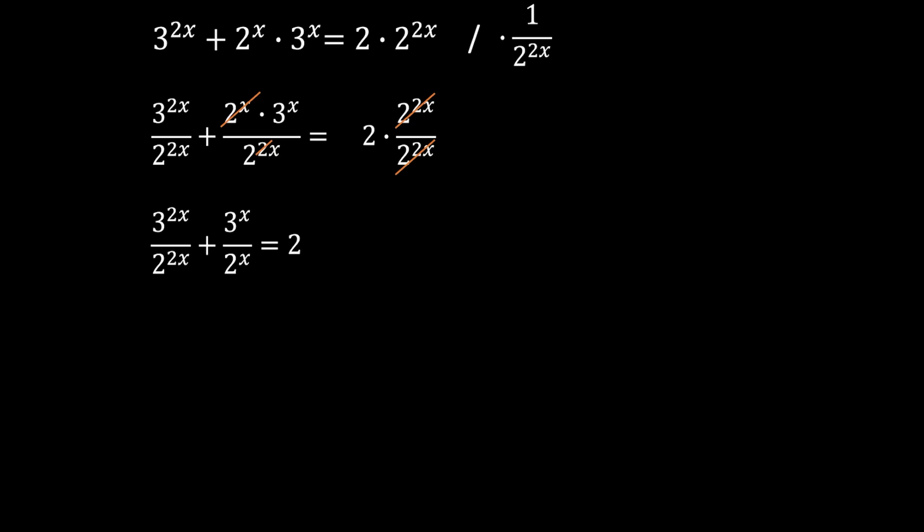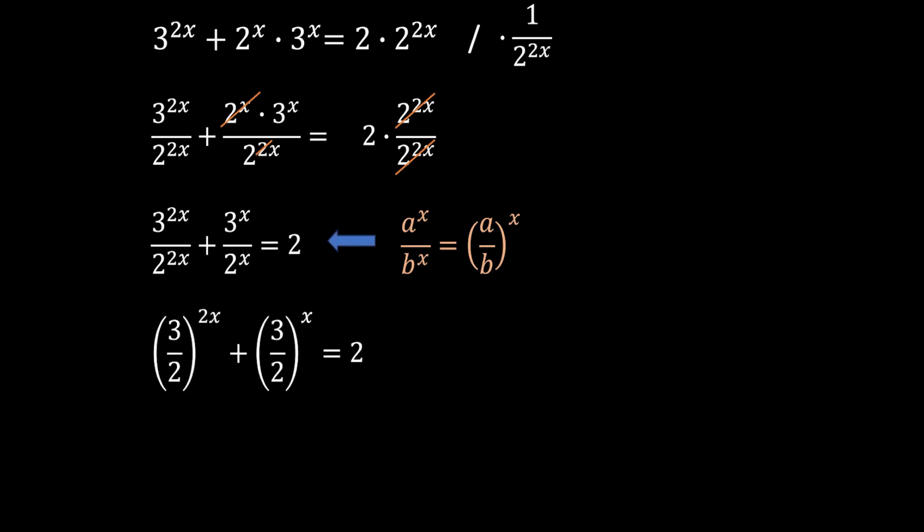Here we will use another exponential rule called power of quotient, which says that a over b to the power of c equals a to the power of c over b to the power of c. Applying this to our equation we get 3 over 2 to the power of 2x plus 3 over 2 to the power of x equals 2. As you can see we now have one common base, which is good, and now we will enter the substitution.